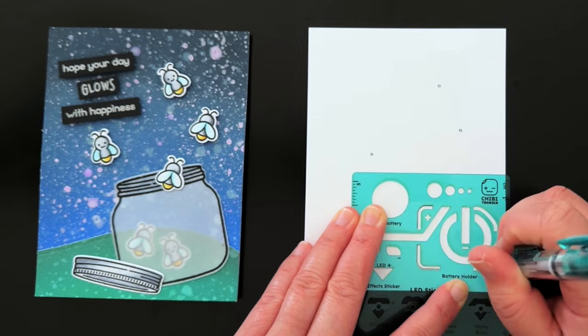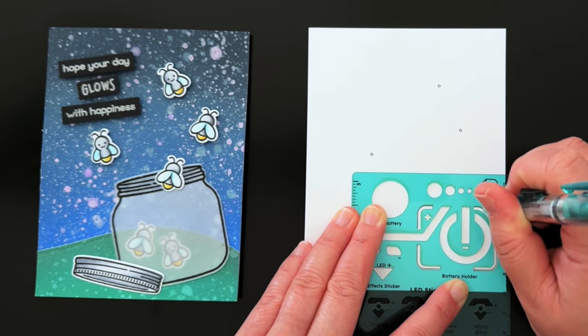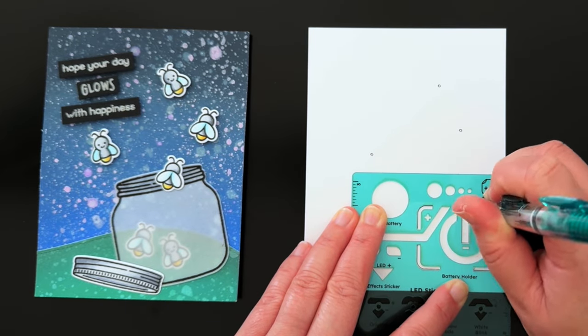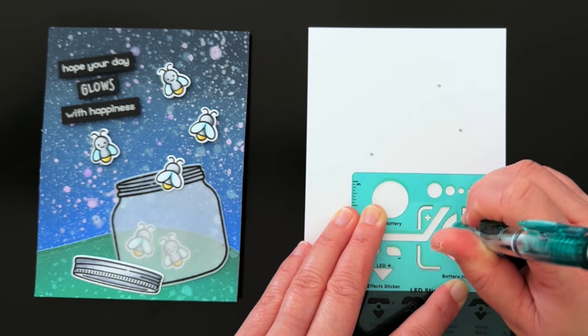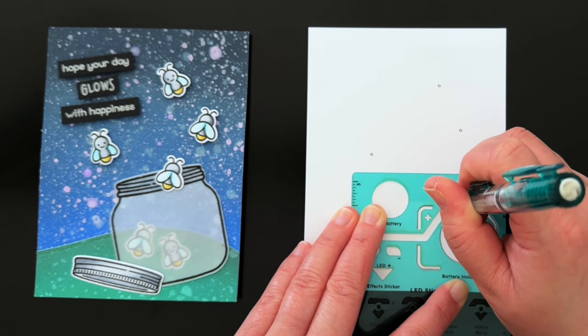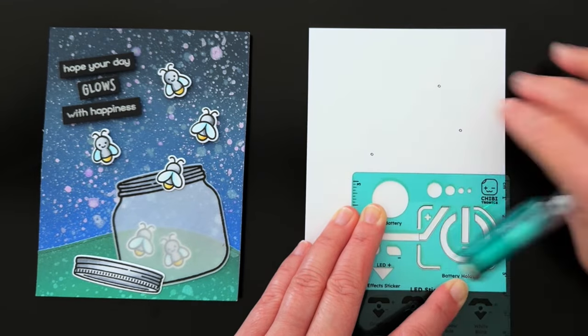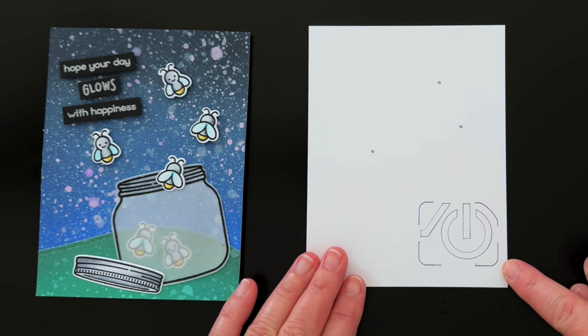I've notated dots on my A2 panel to indicate where my lights should be. I place the Chibi stencil over the panel and orient the battery holder towards the bottom right corner. Then I trace the outline for my battery holder, foam ring, and tape lines. This is also a helpful guide if you're creating your own battery holder.